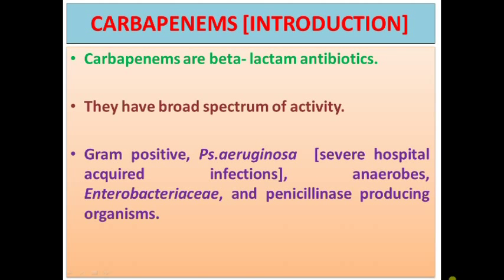This class of antibiotics is called carbapenems. These are beta-lactam antibiotics with a broad spectrum of activity. They are active against gram-positive organisms, pseudomonas organisms, anaerobes, enterobacteria, and penicillinase-producing organisms. This is a higher-order antibiotic which can be used for severe and reserve infections in individuals.